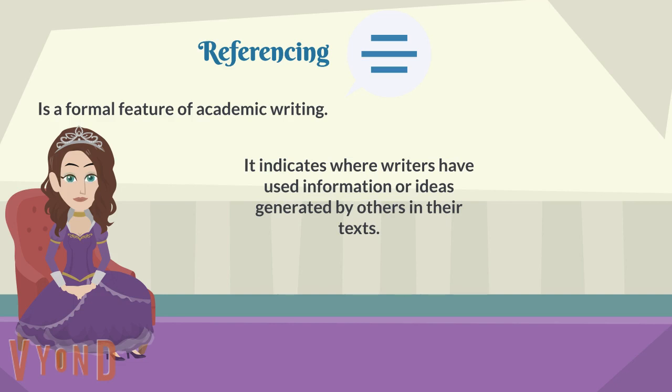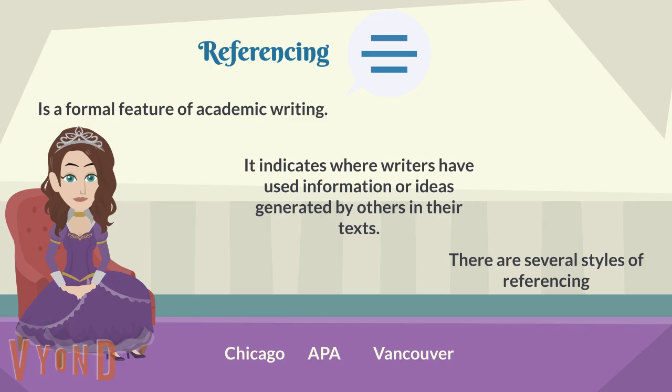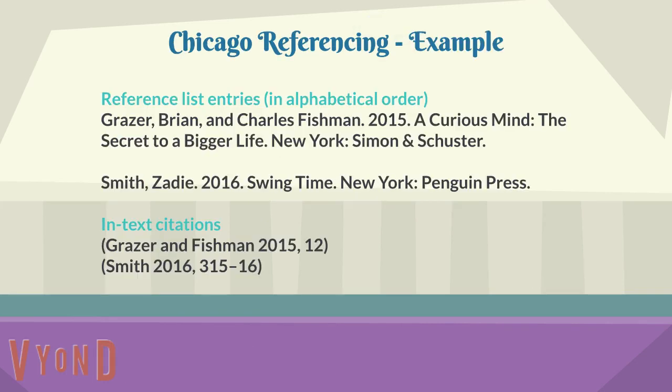There are several styles of referencing. For example, there is Chicago, APA, and Vancouver. Here is an example of the Chicago referencing style. The referencing style comprises two parts: the in-text citations and the reference list. The reference list and in-text citations must match.